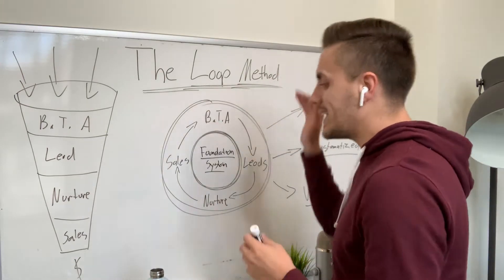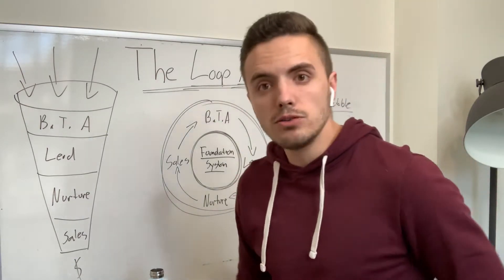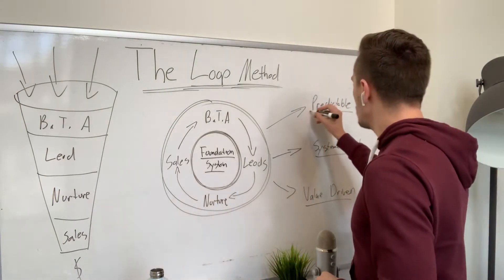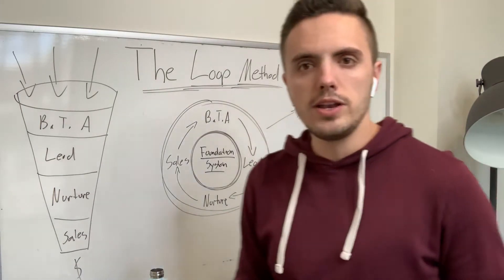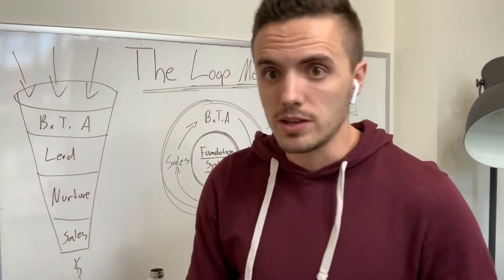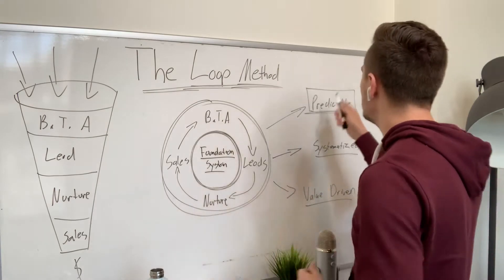So the loop method is an organic marketing system that allows you to acquire clients consistently. The first thing that I was looking for when I was in the online space was predictability. How do I know exactly what to do every single week to get clients every single week? So that's the first thing created for predictability.